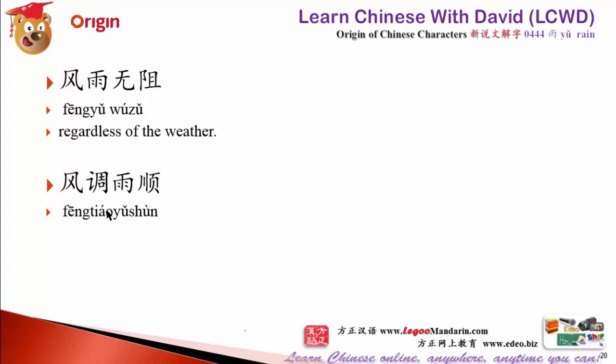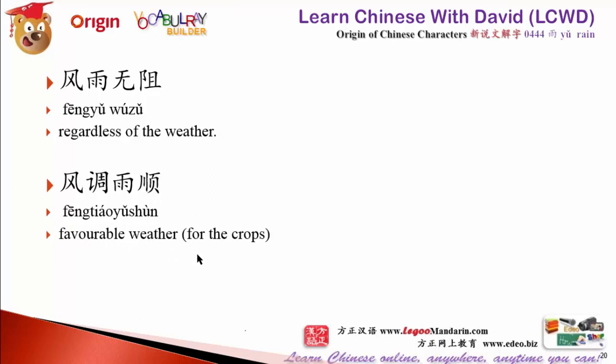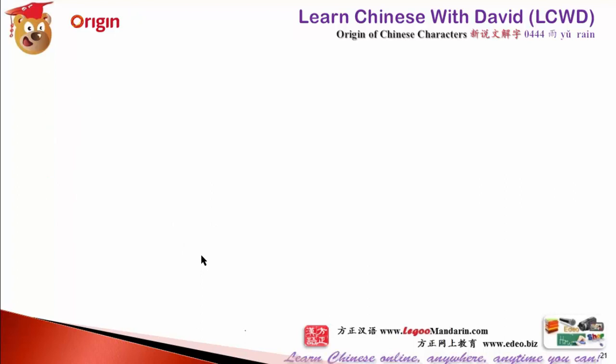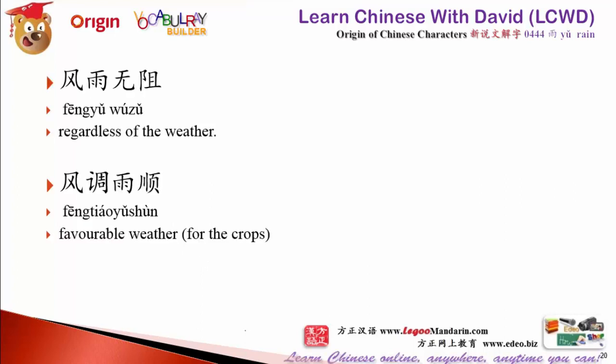风调雨顺 — 调 means adjust, 顺 means follow. The wind can be adjusted and the rain follows your wish, meaning favorable weather for the crops and farms. In agriculture, especially in China, many parts 靠天吃饭 — rely on the sky, rely on the weather to have food. Favorable weather means harvest; unfavorable weather means the crop will fail.